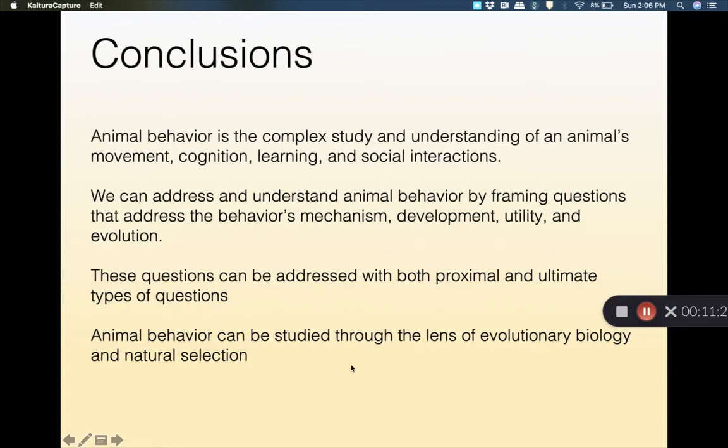And lastly, we really can understand animal behavior through the lens of evolutionary biology and natural selection. And ultimately, a lot of behavior that we see is going to be abiding by the laws of natural selection and other things and non-adaptive evolution as well.